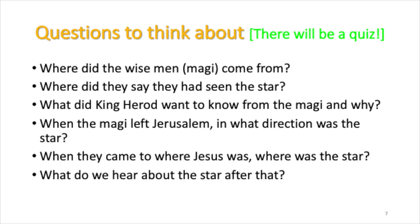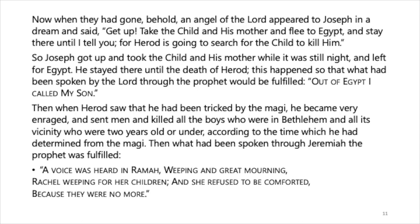When they saw the star they rejoiced exceedingly with great joy. Coming into the house, they saw the child with Mary his mother, fell to the ground and worshiped him. Opening their treasures, they presented gifts of gold, frankincense, and myrrh. Having been warned by God in a dream not to return to Herod, the Magi left for their own country by another way. An angel of the Lord appeared to Joseph in a dream: 'Get up, take the child and his mother and flee to Egypt and remain there until I tell you, for Herod is going to search for the child to destroy him.'